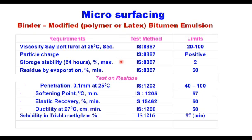The modifier shall be polymer or rubber, preferably synthetic or natural rubber latex, blended into bitumen or the aqueous phase of emulsion prior to or during the emulsification process. Viscosity at 25°C should be 20 to 100 seconds, particle charge positive, stability in 24 hours maximum 2, and residue by evaporation minimum 60%. Tests on residue — penetration, softening point, elastic recovery, ductility, and solubility — are given in the table.